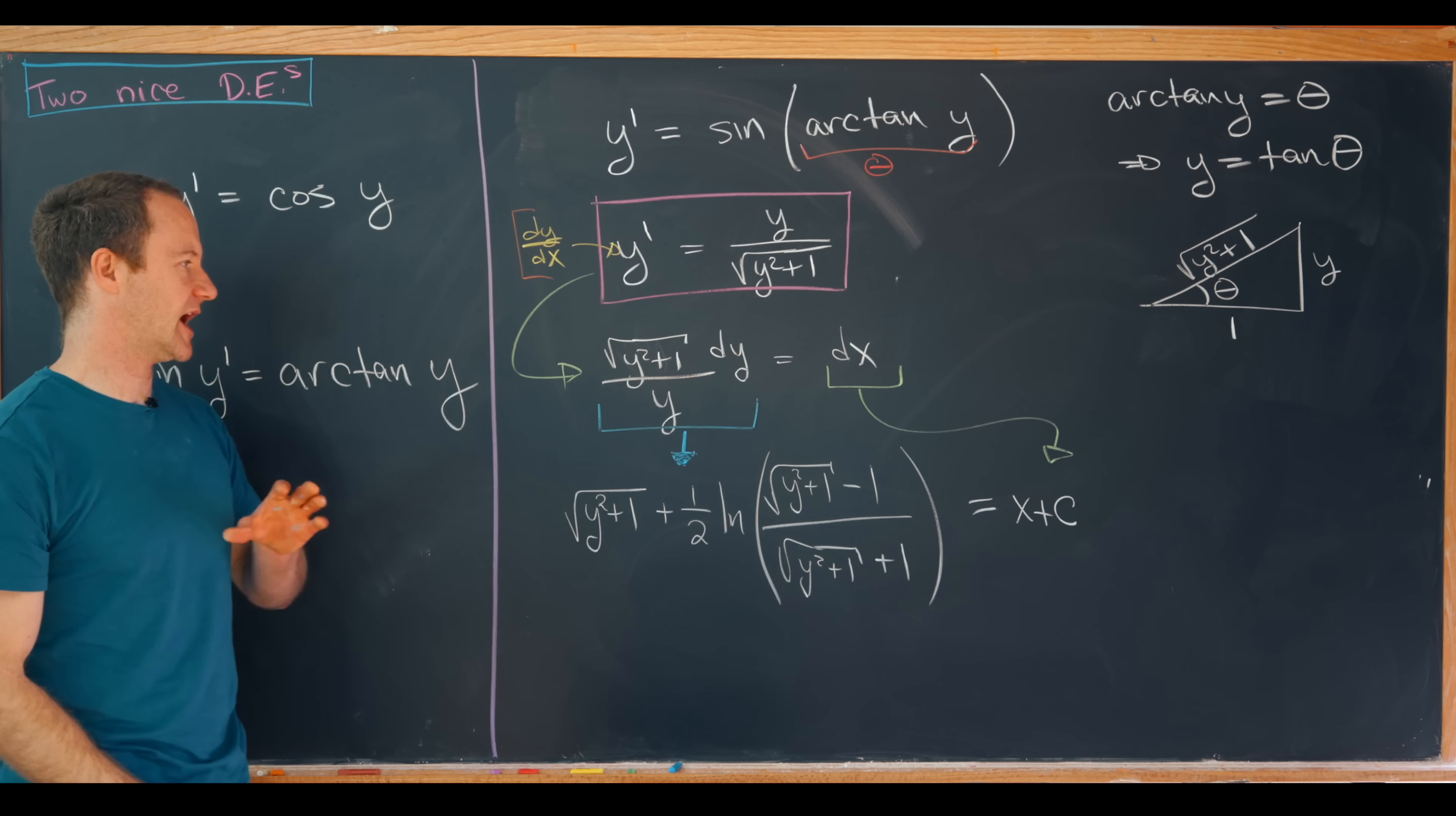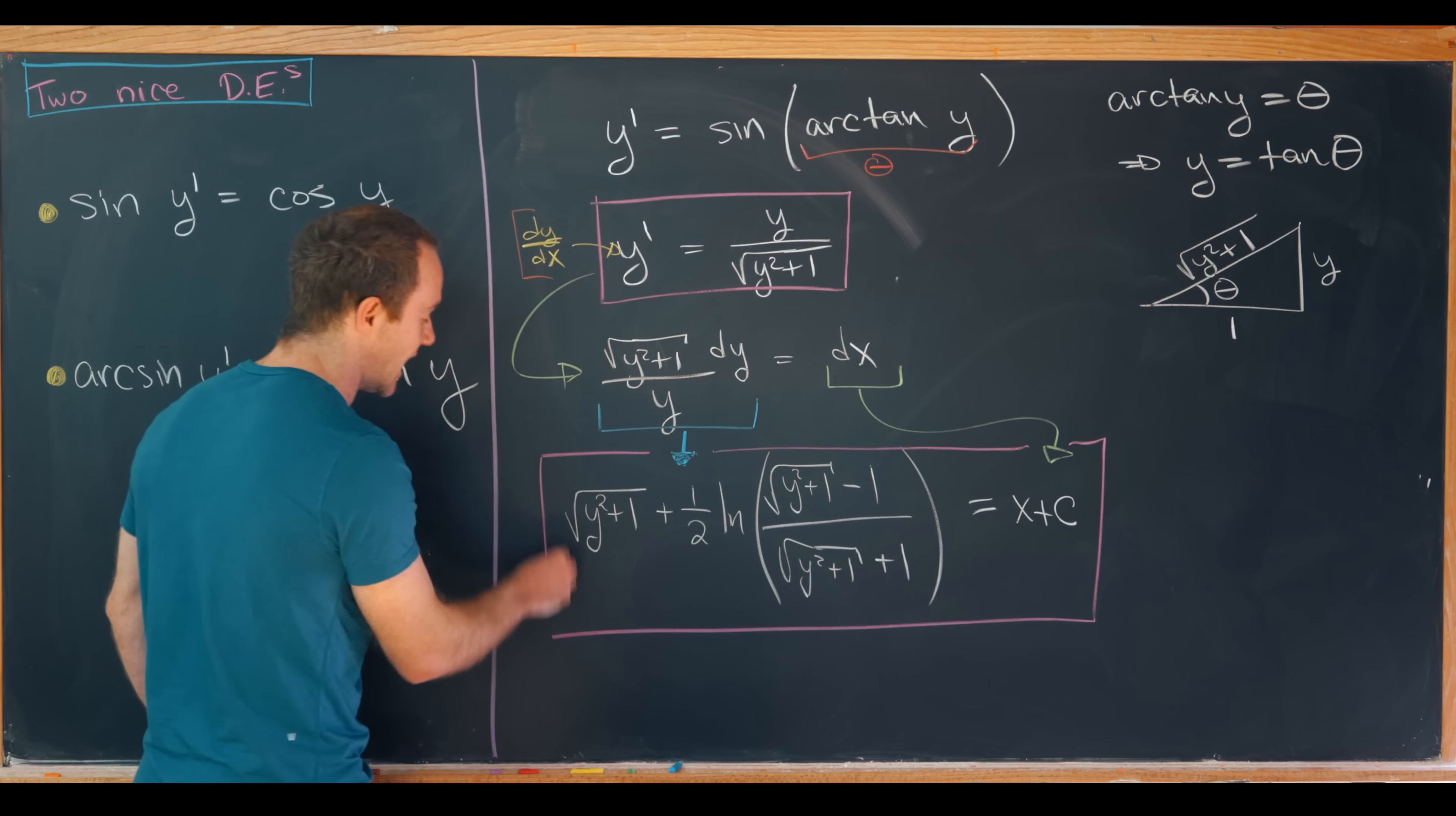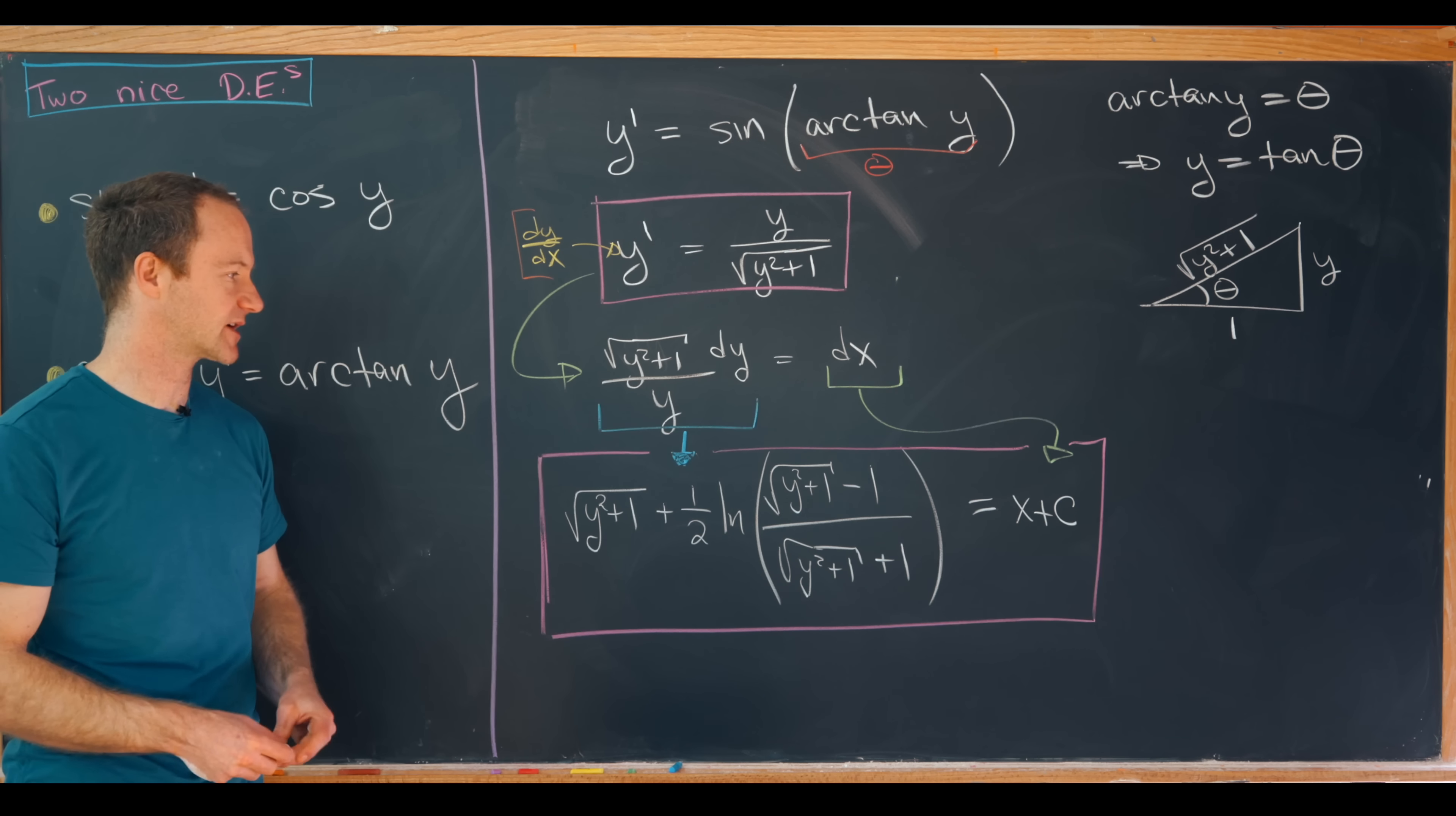So here's a summary of what we just had. This left hand integrated to this gnarly object but then the right hand side just integrates to x plus a constant. And I don't know unfortunately, or this is just the situation, this is not reasonable to solve for y as a function of x. So we'll take this as an implicit description of our solution for y as a function of x.